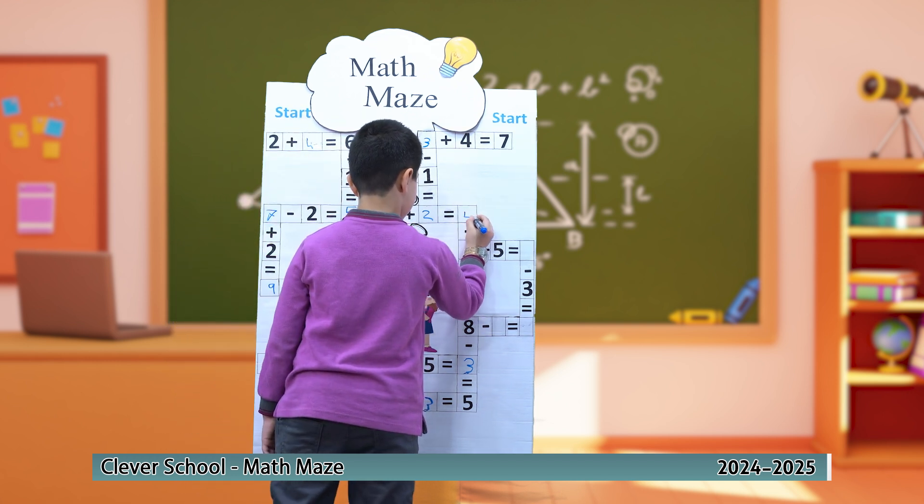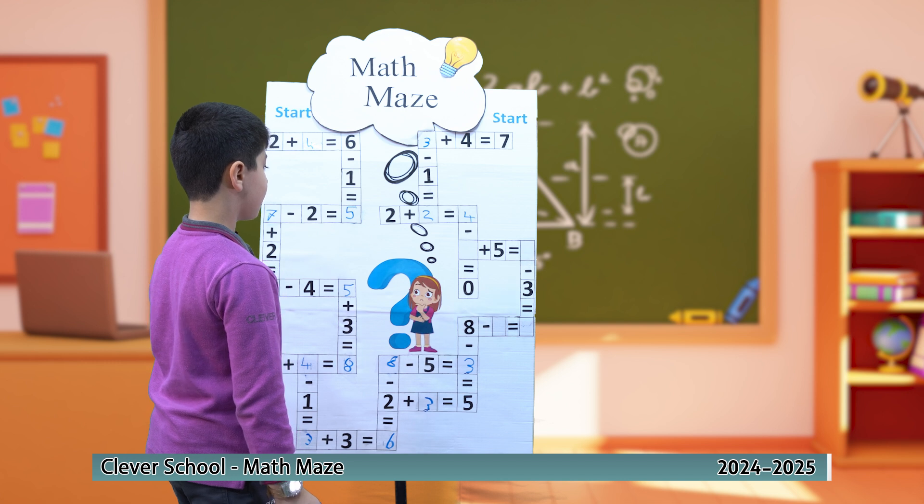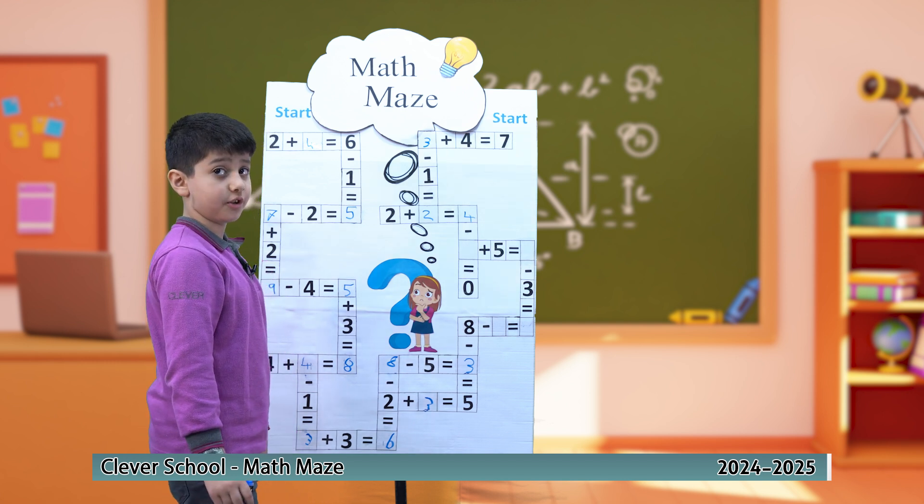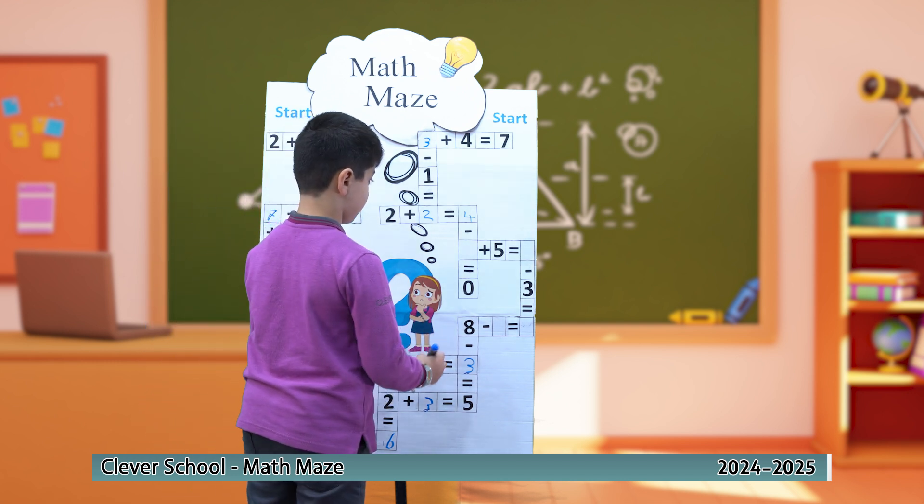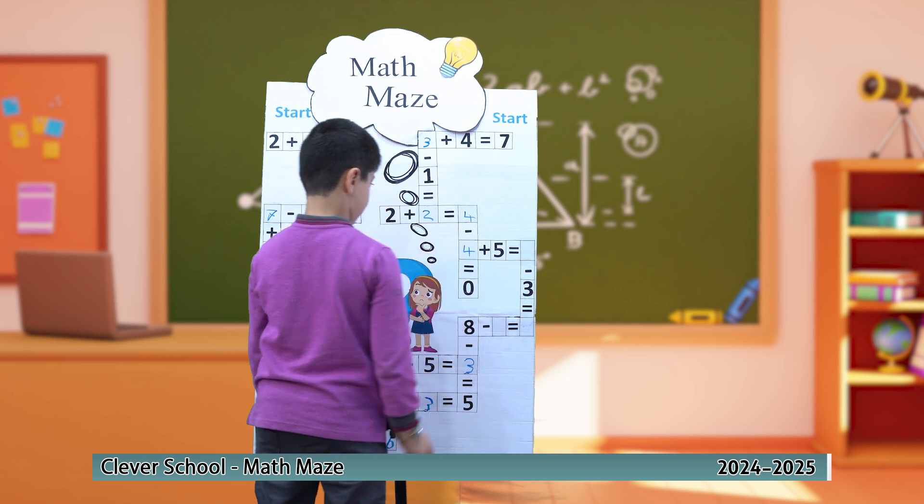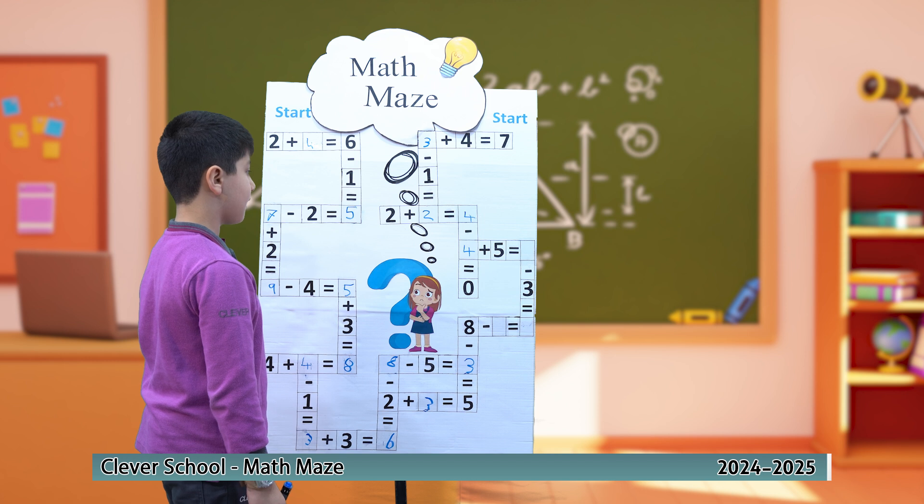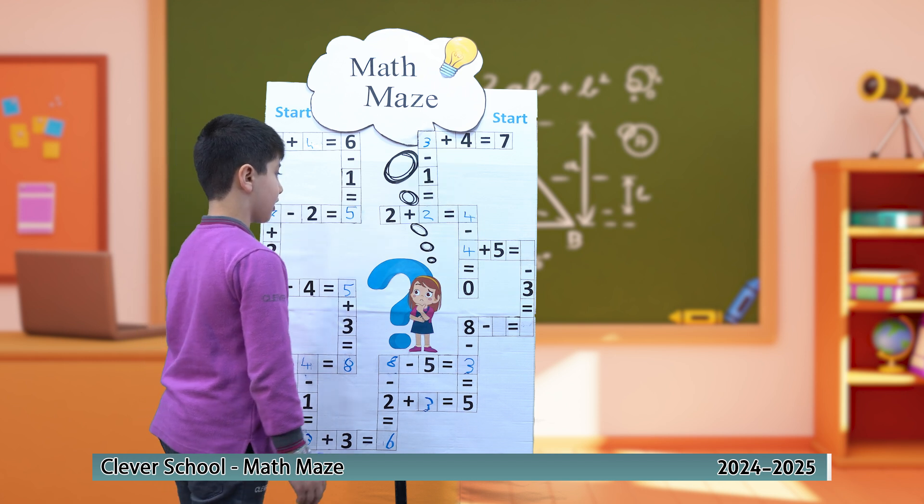2 plus 2 equals 4. 4 minus which number equals 0? 4. 4 plus 5 equals 9.